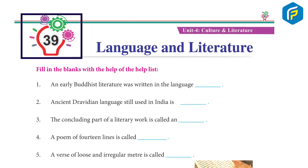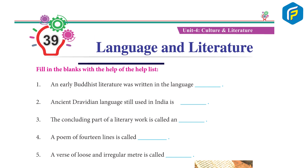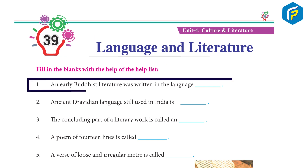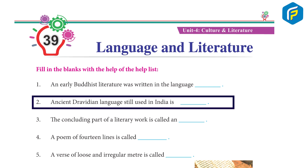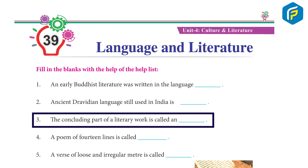Chapter 39: Language and Literature. Fill in the blanks with the help of the given hints. One: early Buddhist literature was written in this language — Pali. Two: ancient Dravidian language still used in India is Tamil.